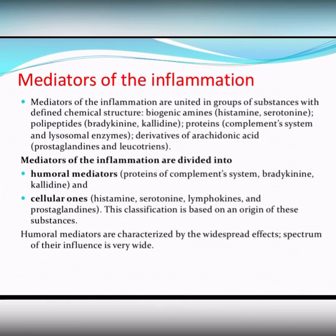All mediators of inflammation are divided into two groups: humoral mediators, like proteins of the complement system, bradykinin, and the kallikrein-kinin system; and cellular ones — histamine, serotonin, lymphokines, and prostaglandins. This is the main classification we use, and it is based on the origin of these substances. Humoral mediators are characterized by widespread effects — their spectrum of influence is very wide.